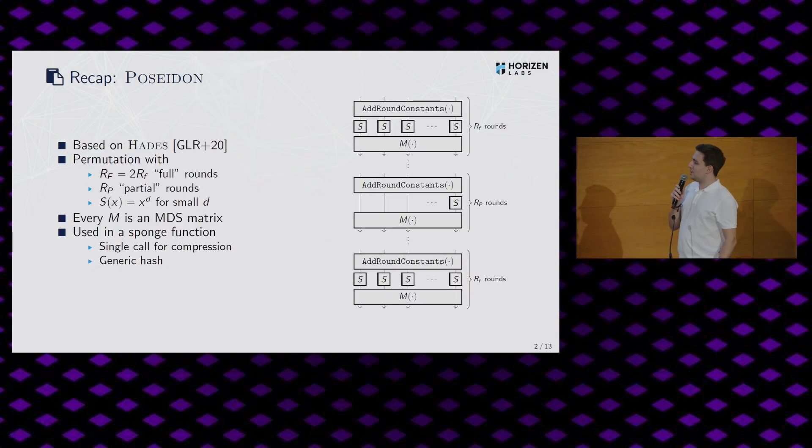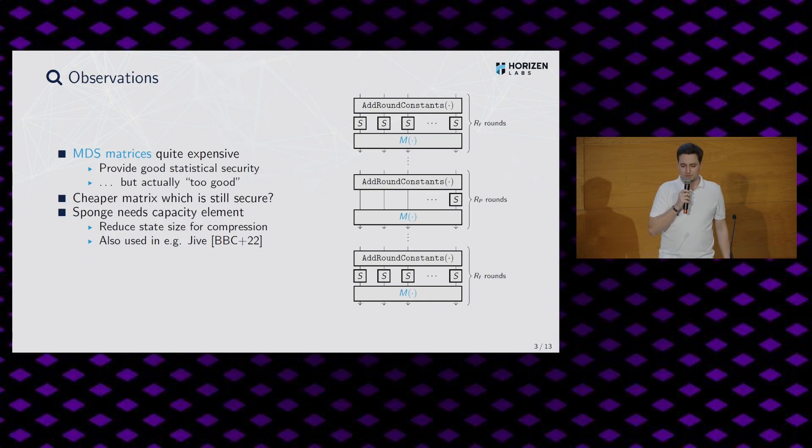And we are going to talk about that in this talk. But first, let me give you a very short recap how Poseidon actually works. So it's essentially a cryptographic permutation. You can see the design on the right side here. And in the beginning, we call them full rounds because we apply the S boxes or the nonlinear functions to the whole state. Then we have some partial rounds. And then we again have these full rounds and these monomial functions for the S boxes. And the thing, the important thing is that every matrix, every M, this is a matrix multiplication, is actually an MDS matrix. And all these things, the permutation then gets used in a classical sponge mode to, for example, build a general purpose hash function or even encryption if you want.